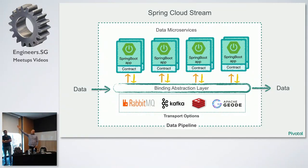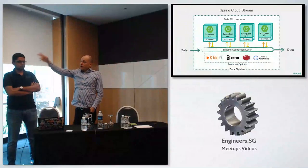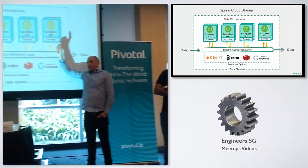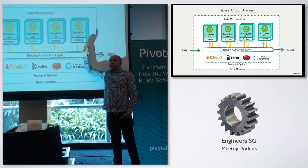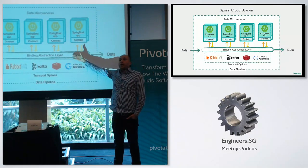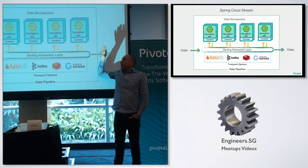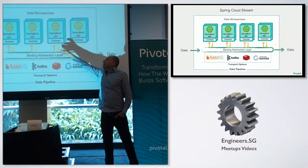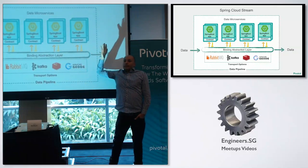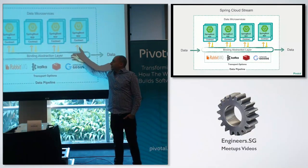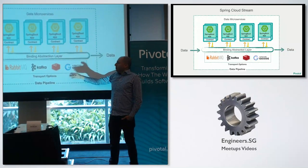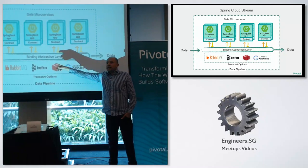This is what they call Spring Cloud Stream — one of the Spring libraries. What makes it cool is that those apps are completely independent. They don't need to know each other — they only need to know how to send or receive the data. You can scale one up, scale down another, and so on. The abstraction layer binds to message queues like Kafka, RabbitMQ, Geode, or Redis, and moves the data between them. Then you can scale these layers.